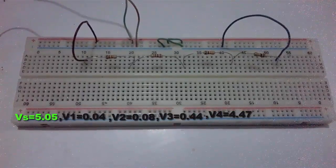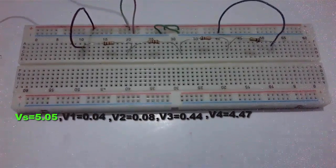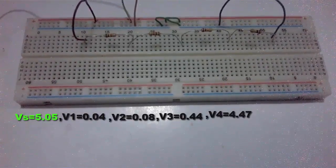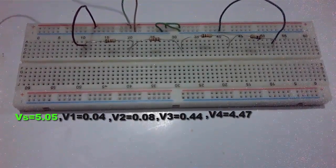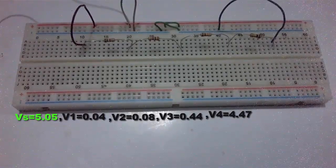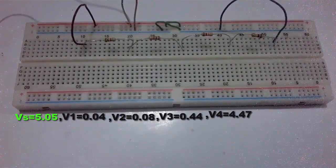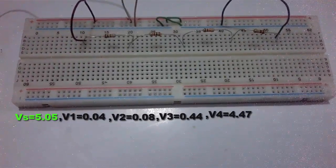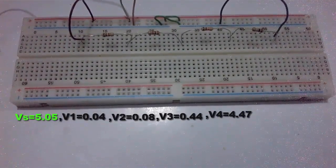In this experiment, we get Vs = 5.05V, V1 = 0.04V, V2 = 0.08V, V3 = 0.44V, and V4 = 4.47V.